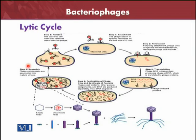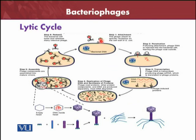This is the lytic cycle of some bacteriophages. Taking the example of E. coli bacteria with its bacterial DNA, the first step: the bacteriophages, containing DNA, attach to specific receptors on the cell wall of E. coli. Then the DNA needs to enter inside — the penetration of the DNA. Following attachment, the phage DNA is injected into the bacterial cell. The capsid stays outside, and the DNA enters inside.